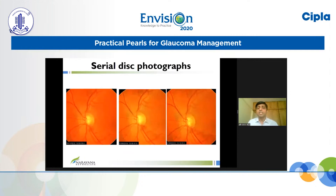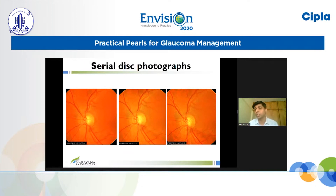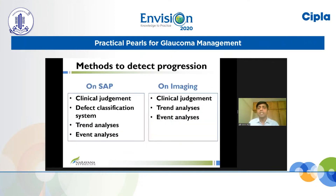Serial photographs of the disc — good quality stereo images — are excellent for detecting progression, especially in a case like this which showed an inferior rim excavation in 2006. In 2008, there was a disc hemorrhage and developing RNFL defect inferiorly, and in 2019 there was a notch inferiorly, resolution of the disc hemorrhage, but an enlargement and progressive thinning of the RNFL defect — you can appreciate the darker hue to the RNFL defect in 2019. Methods to detect progression on standard automated perimetry and on imaging have similar principles and can be discussed together.